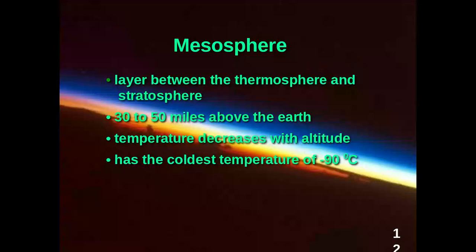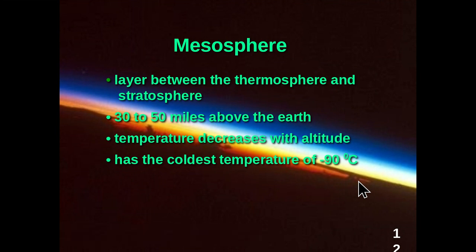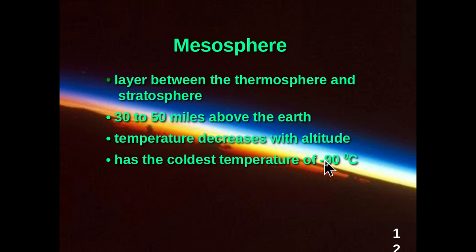Moving up now to the mesosphere — the mesosphere is the layer between the thermosphere and the stratosphere, 30 to 50 miles above the Earth. Temperature decreases with altitude, and the mesosphere contains the coldest temperatures within the atmosphere at about minus 90 degrees. This particular slide shows a picture of a sunrise from the space shuttle. You can see the curvature of the Earth, with light being refracted within each one of the atmospheric layers — the orange layer with cumulus clouds is the troposphere, yellow is the stratosphere, white is the mesosphere, and above that the thermosphere.